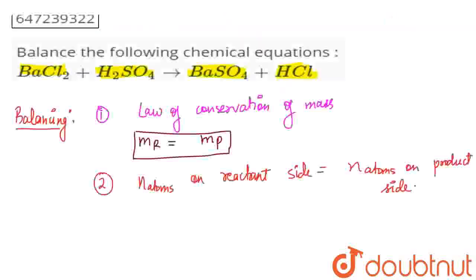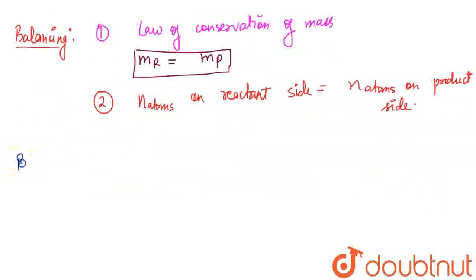So if I talk about this equation, what is our particular equation? Our equation is BaCl₂ plus H₂SO₄ which gives BaSO₄ plus HCl. I have to match all atoms here.